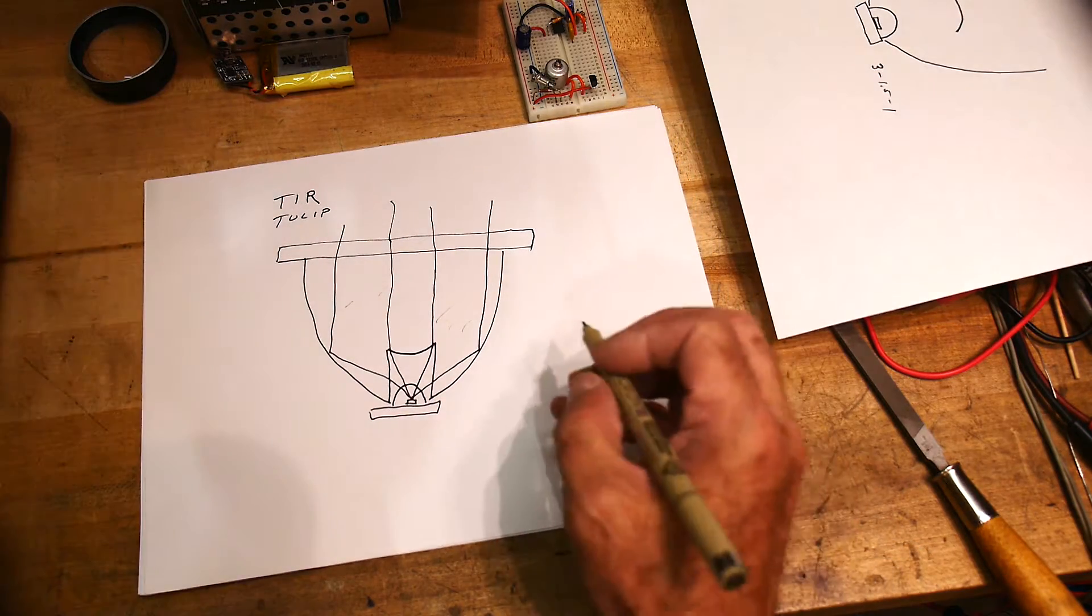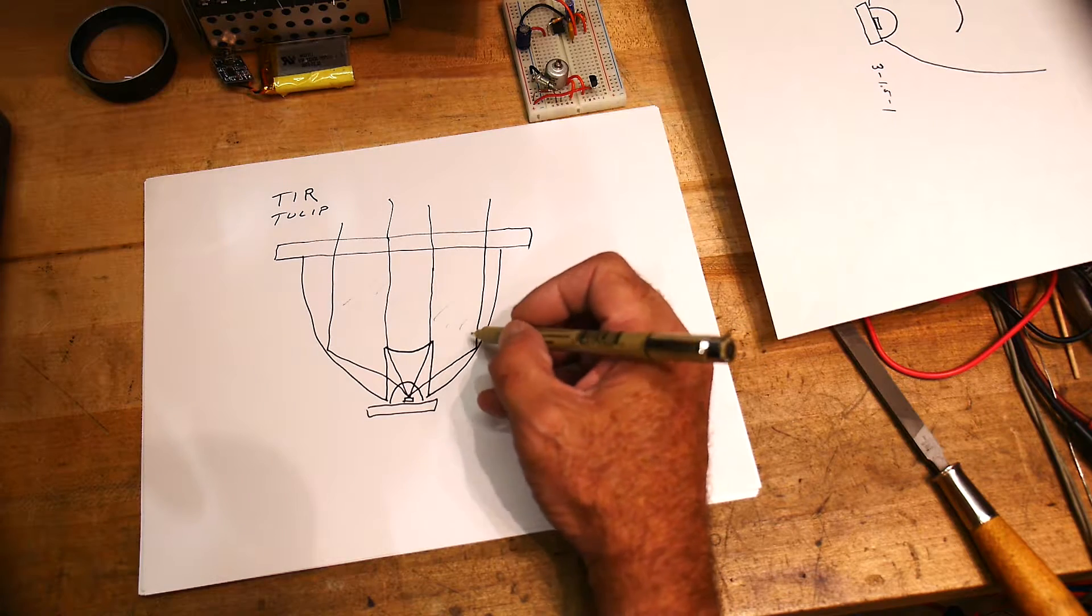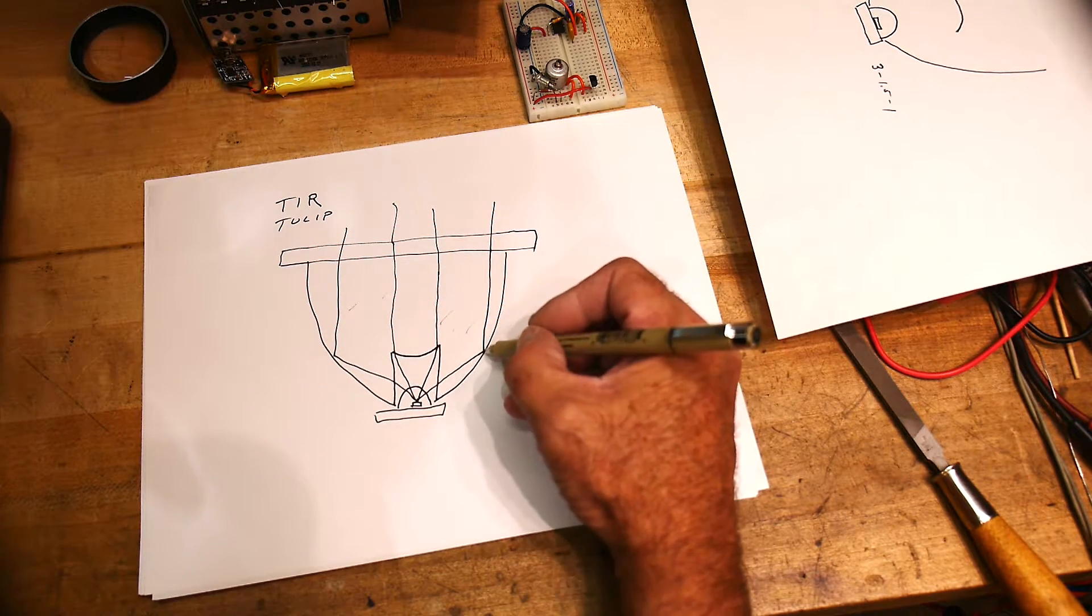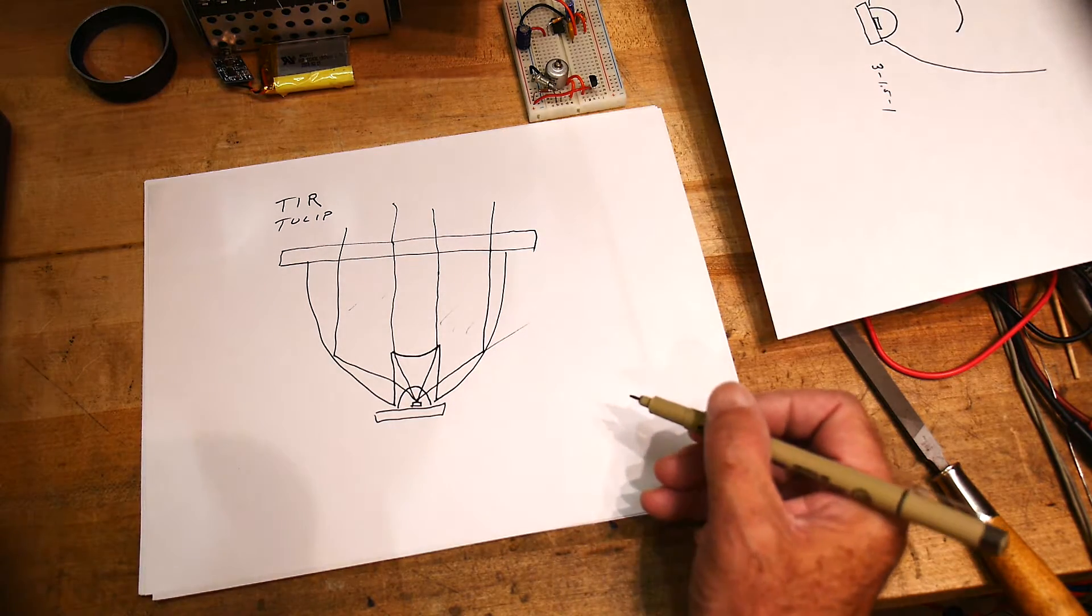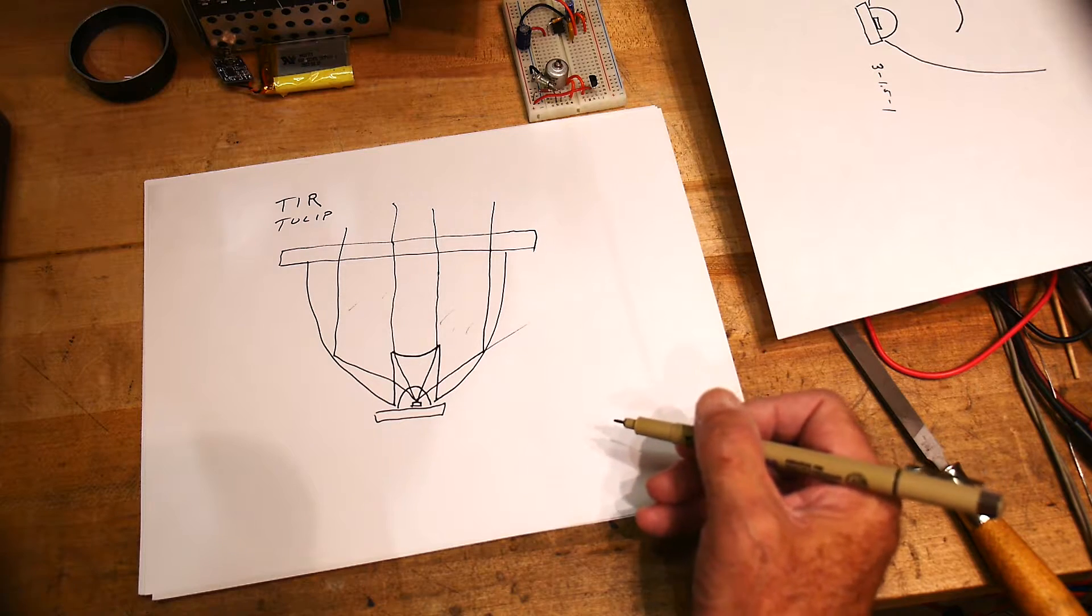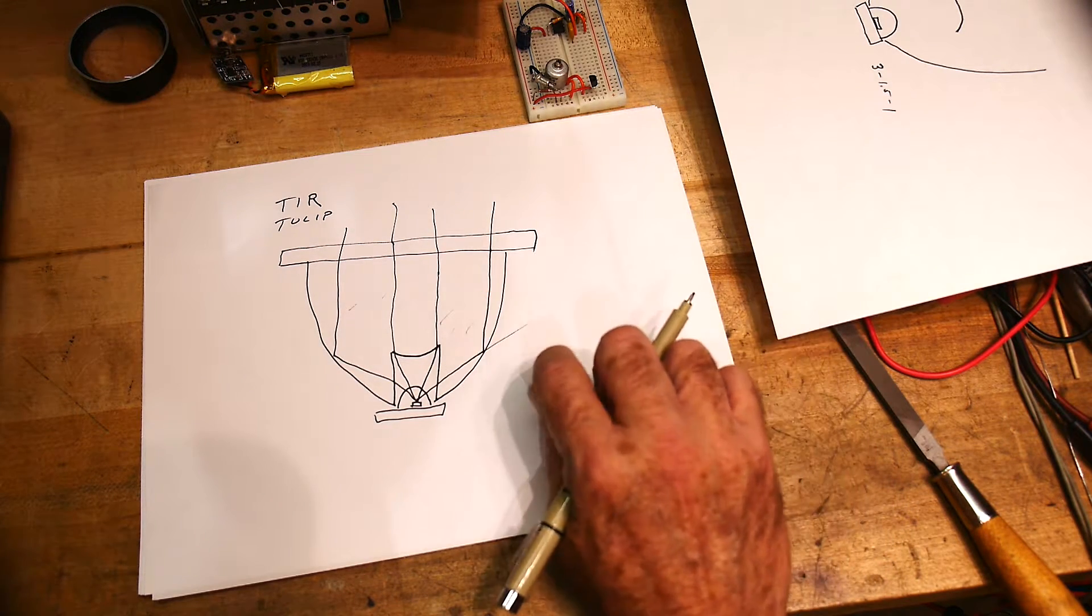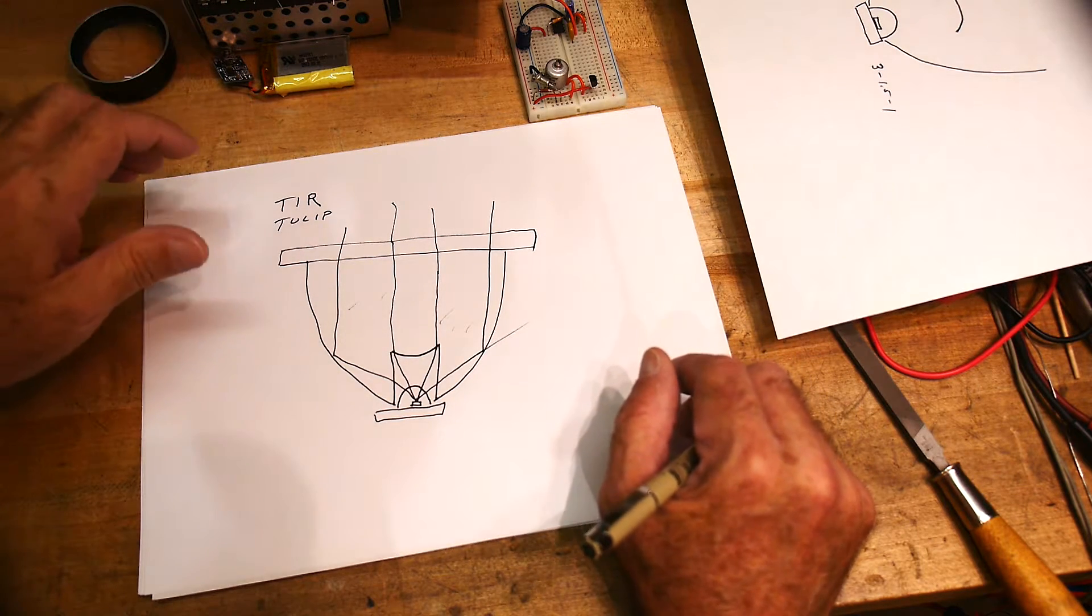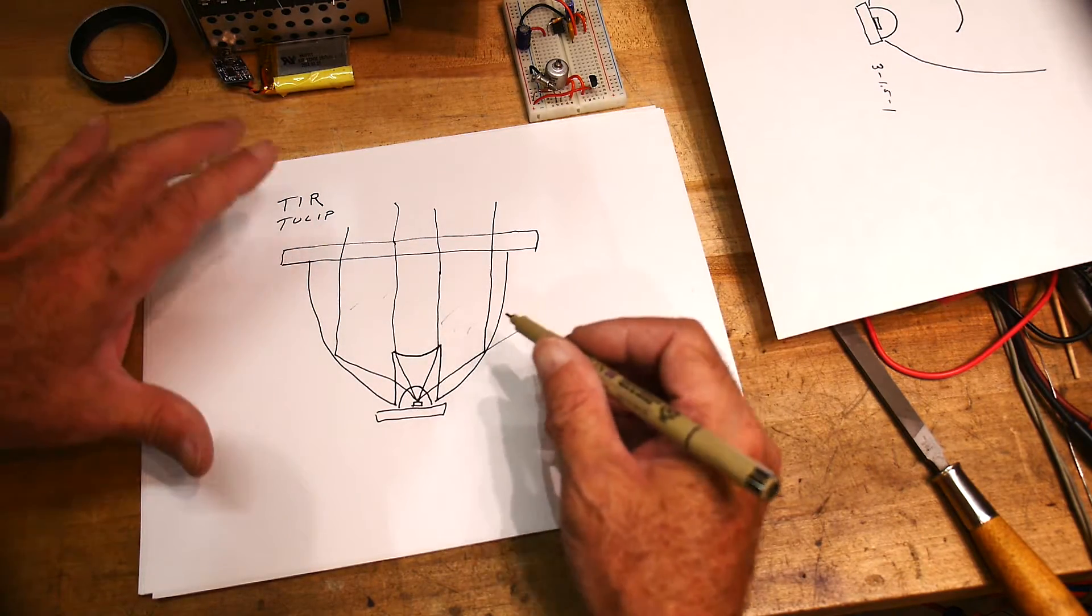Now TIR is funny. If you're inside the plastic and you hit this interface, you would think the ray would just continue out, but it doesn't—it bends back in. And there's particular angles that happens at, and other angles that doesn't happen at.